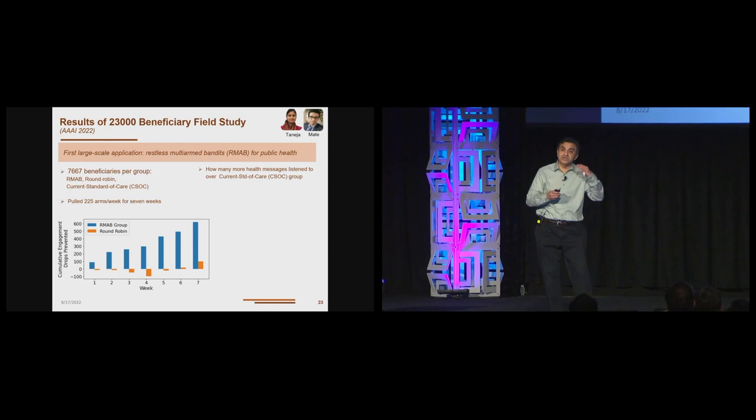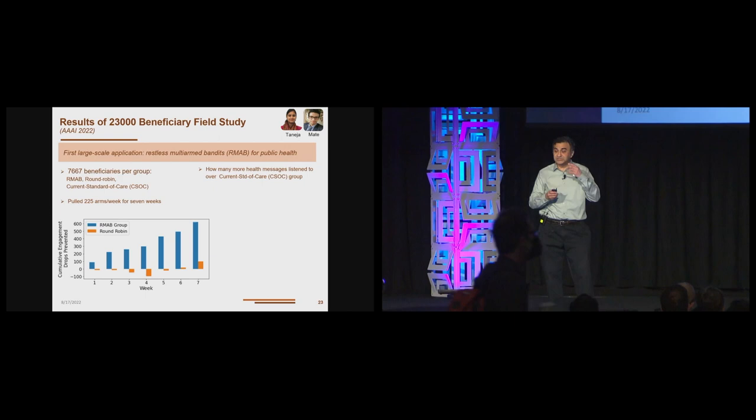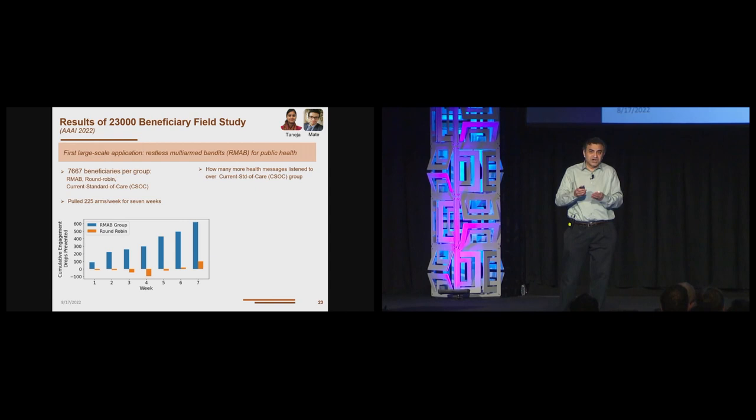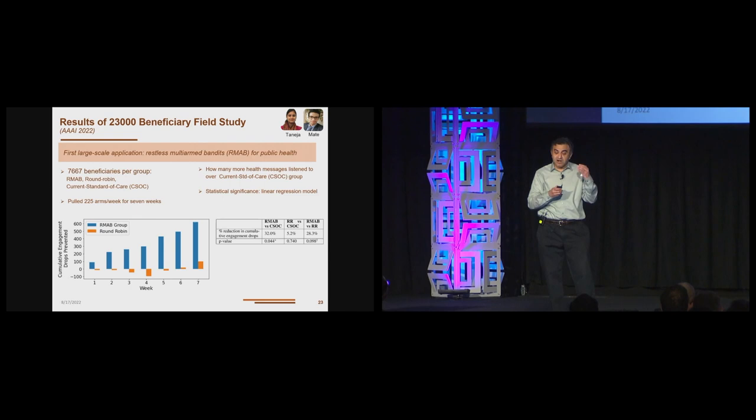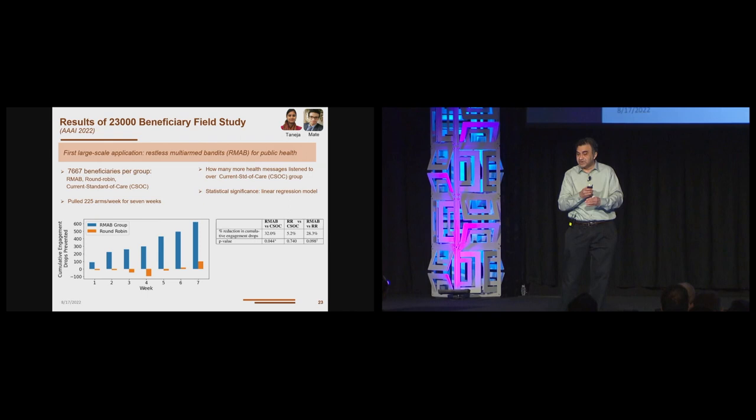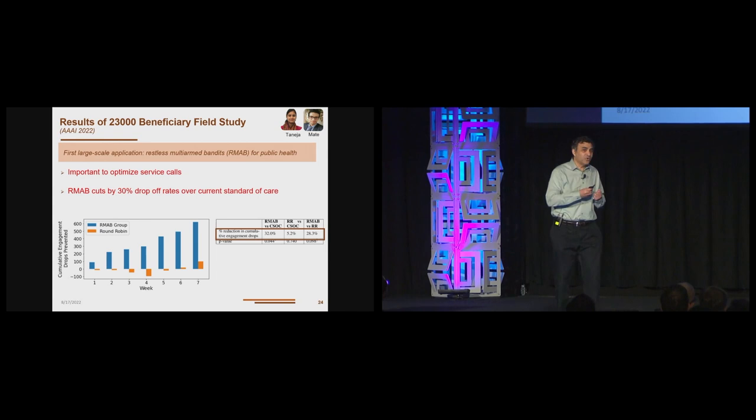And now the question is, how many more health messages were listened to over the current standard of care group in each of the other groups? And here's what we find. After seven weeks, on the x-axis are weeks, on the y-axis are how many more messages are listened to. The restless bandit group or the RMAP group, you can see that 600 more messages are listened to. Whereas in the round-robin group, there's hardly any difference. From a statistical significance perspective, the RMAP versus current standard of care is statistically significant. Round-robin versus current standard of care is not significant.